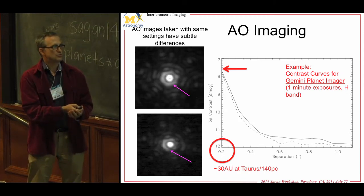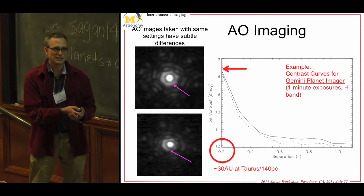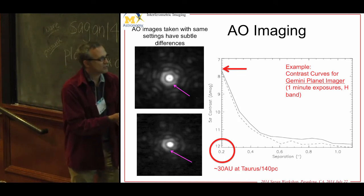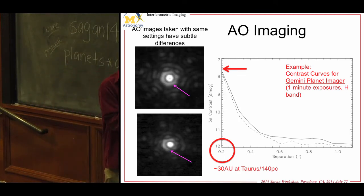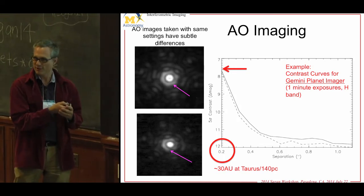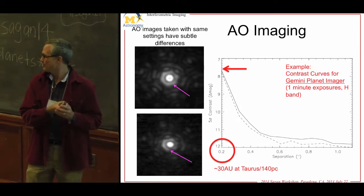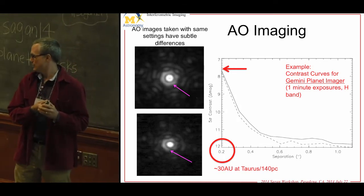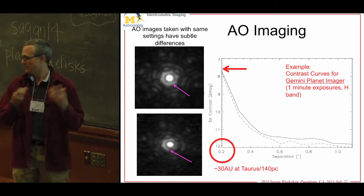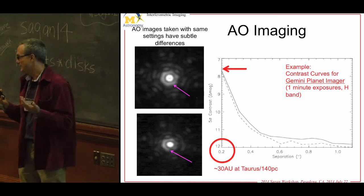Just to emphasize this: that inner working angle corresponds to 30 AU. From the very beginning with G-PI or SPHERE, you're throwing away the inner 30 AU of every young star you point at. That's shocking because you typically think of planets inside 30 AU.